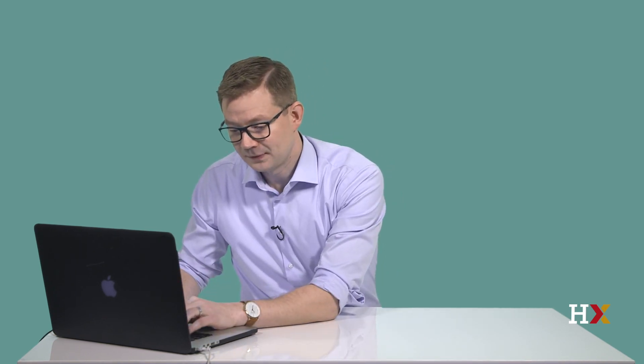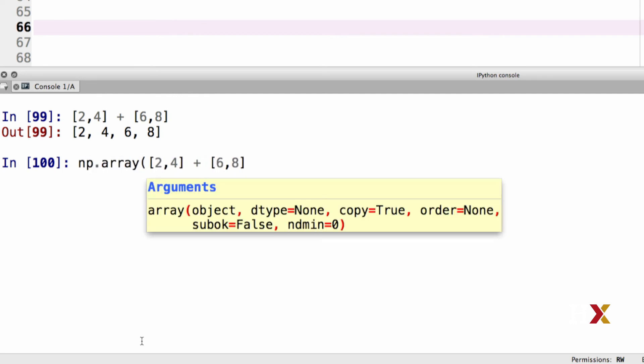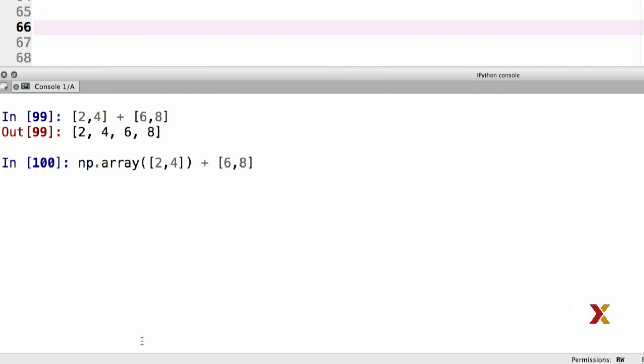Now let's look at a different example. What happens if we first turn those lists into numpy arrays and then have a plus sign between them? I'm going to take my previous line here. I'll just turn this into a numpy array. So my first numpy array has two elements, 2 and 4.